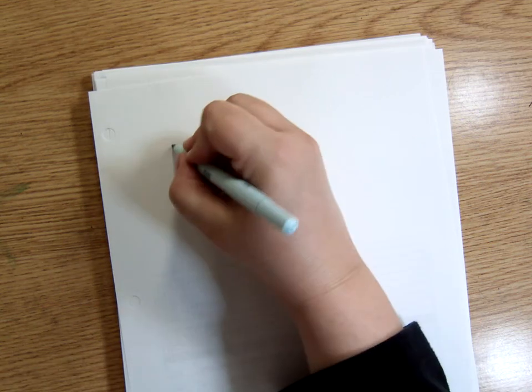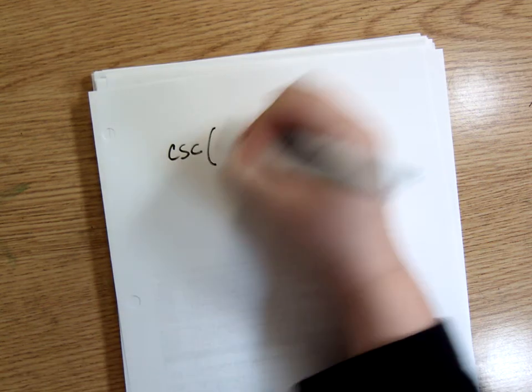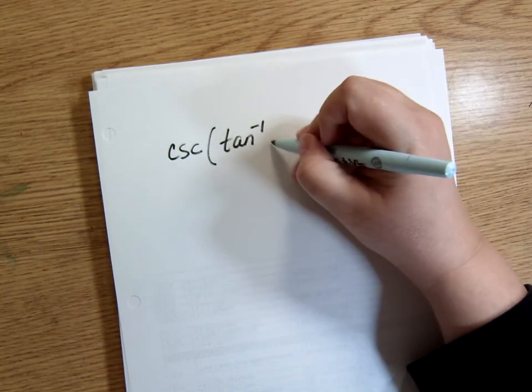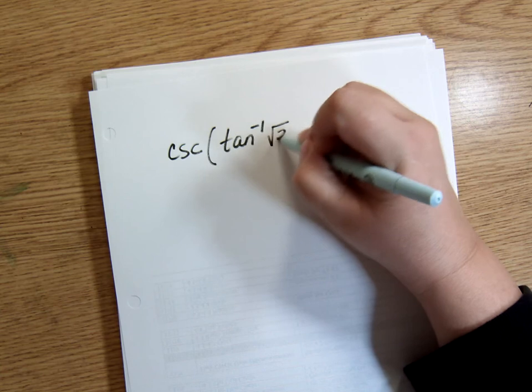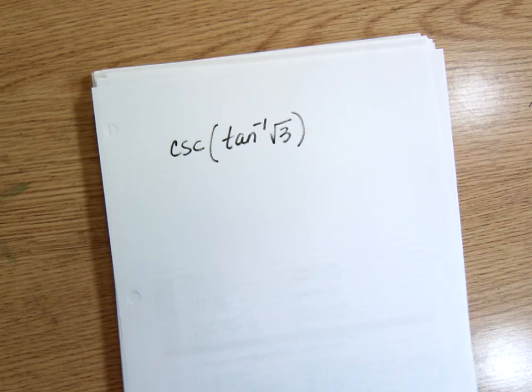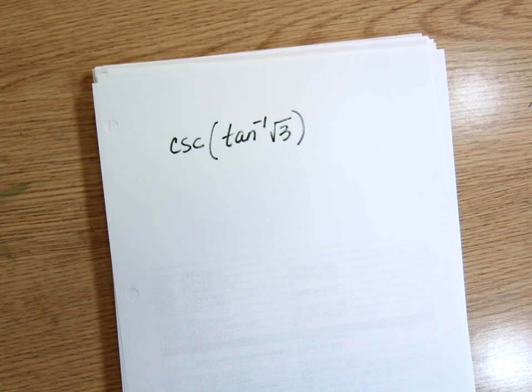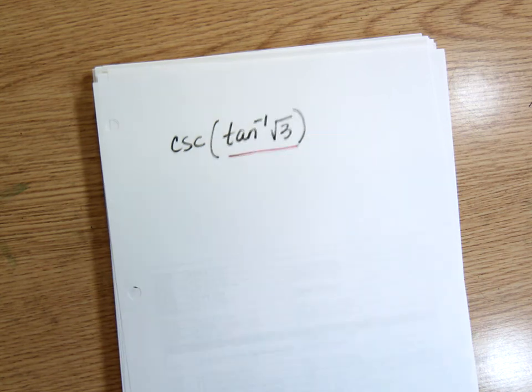So let's look at another couple like that. Cosecant of inverse tan of square root of 3. So basically I'm going to start out, and I'm sorry these markers aren't the best, by doing that part.